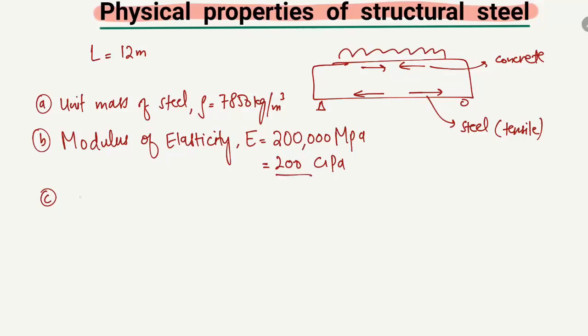The third property is the Poisson's ratio of structural steel. The Poisson's ratio is usually taken as 0.3.